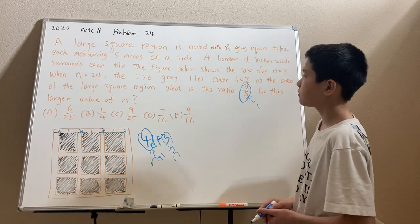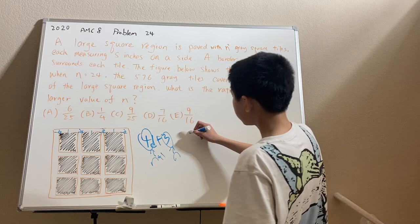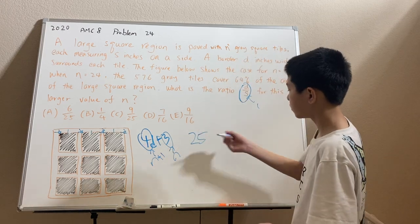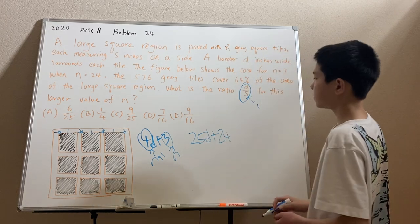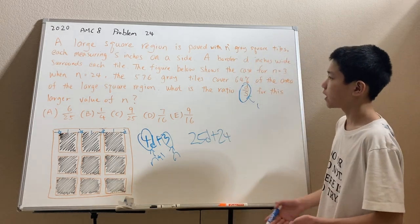Now, if we do the same for the n equals 24 case, we'll get n plus 1, 25d plus 24. And that's going to be the side of the larger square when n equals 24.